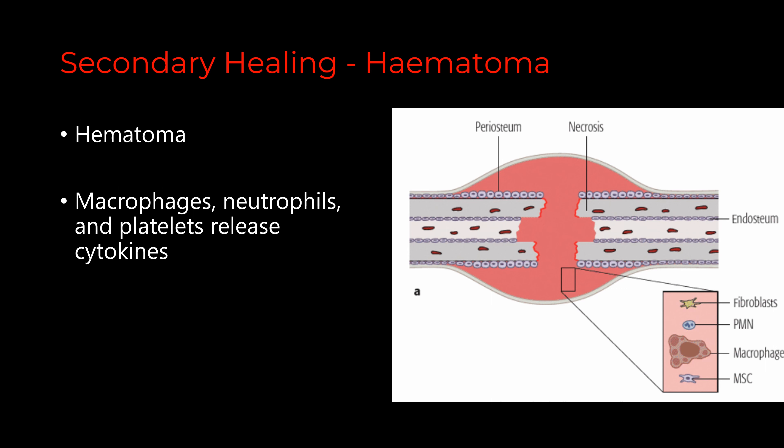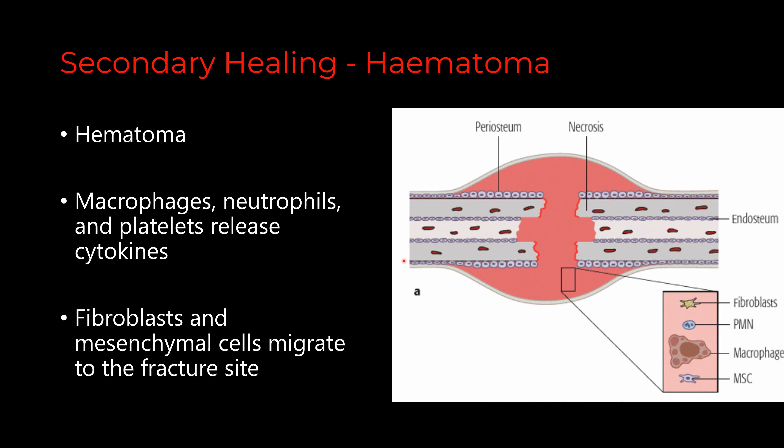Predominantly platelet-derived growth factors, TNF-alpha, transforming growth factor beta, and interleukins such as IL-1, IL-6, IL-10, and IL-12. All these cytokines recruit fibroblasts and mesenchymal cells, forming granulation tissue. The osteoblasts and fibroblasts start to proliferate inside this granulation tissue, and this is the reason why it is better to avoid NSAIDs during this phase, because inhibition of the enzyme COX-2 can affect osteoblastic cellular differentiation.